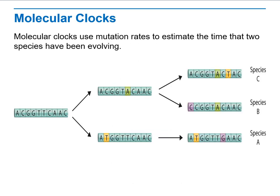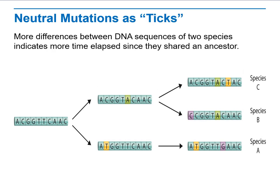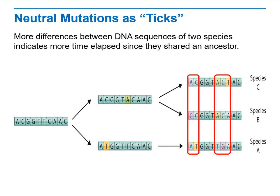Here we can see how a mutation in one gene can cause one single original gene to give rise to three different species. When we talk about molecular clocks, we mean using mutation rates to estimate the time that two species have been evolving separately. Neutral mutations, or ticks, and greater differences between the DNA sequences of two species indicate more time has elapsed since they shared the same common ancestor.